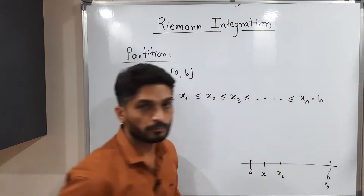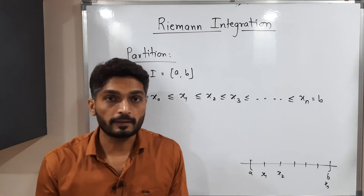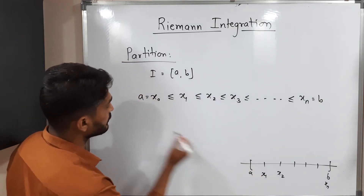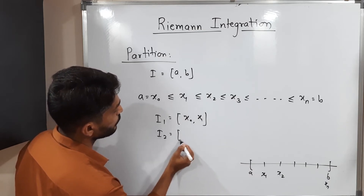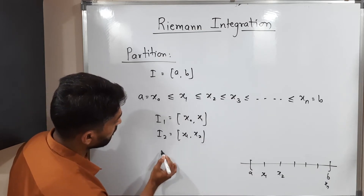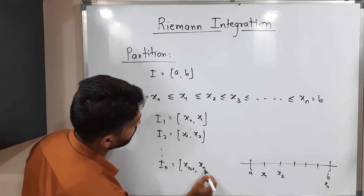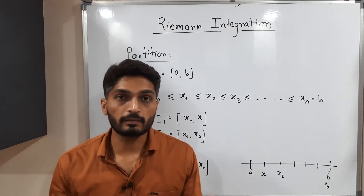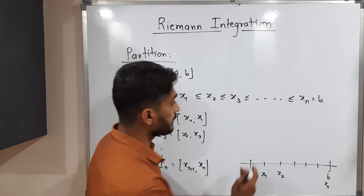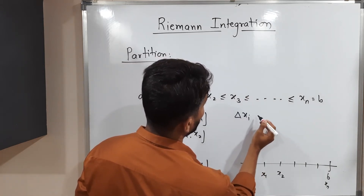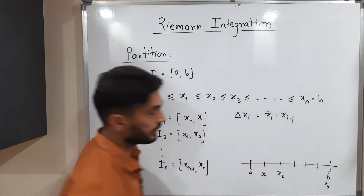The last point is xn, which is nothing but b. Because of these points, this interval is subdivided into small sub-intervals. So we get the first interval I1 = [x0, x1], the next is I2 = [x1, x2], and so on. Finally, In = [x(n-1), xn]. Because of these points, the interval is divided into sub-intervals of different lengths. We denote those lengths using delta xi.